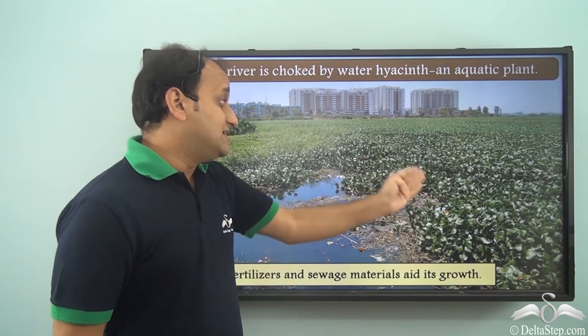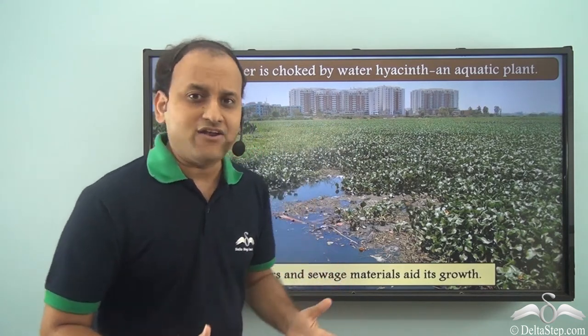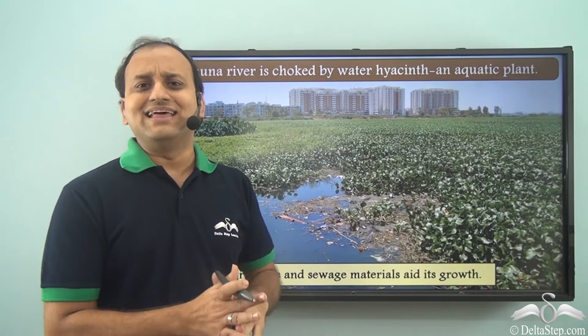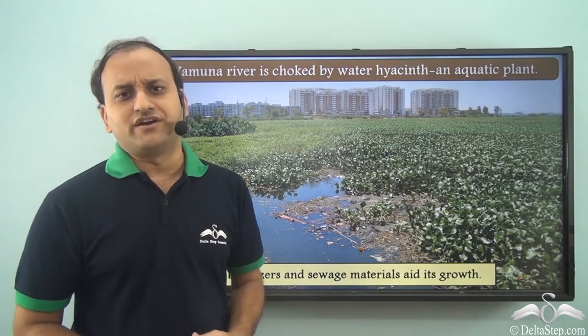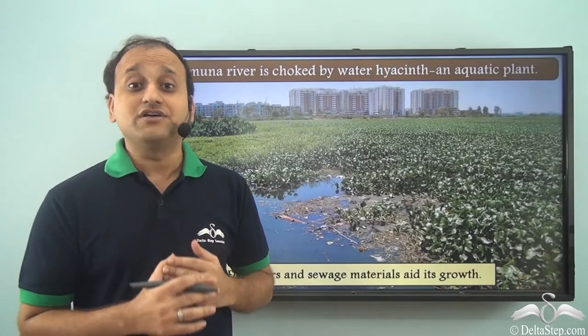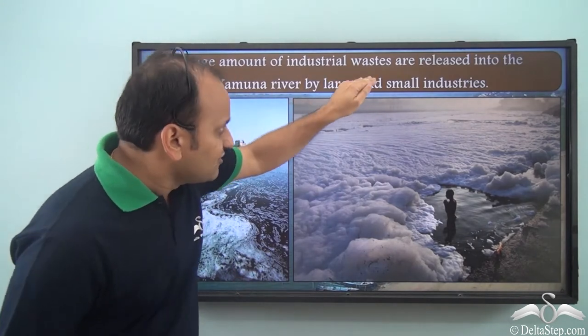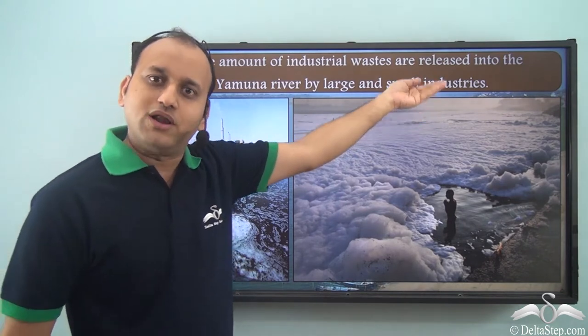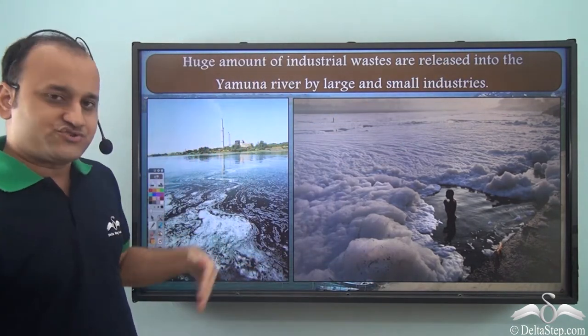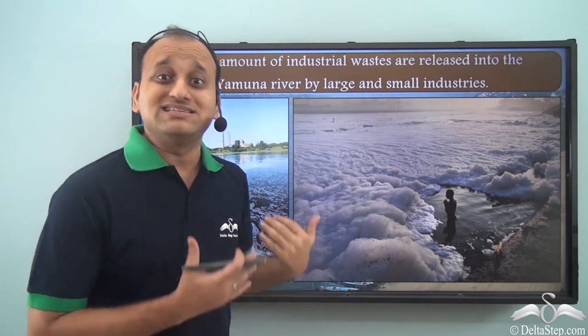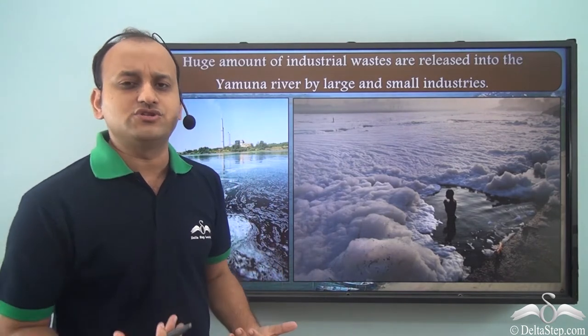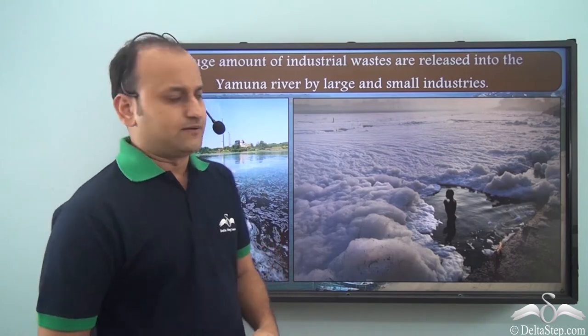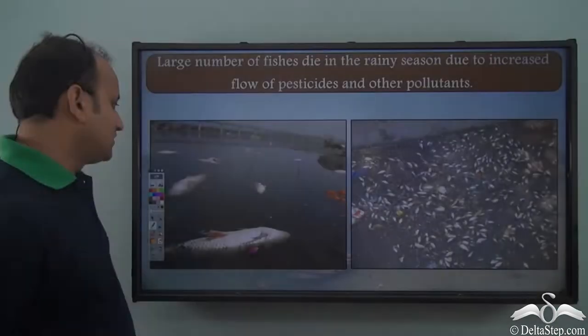When water hyacinth grows in huge numbers, it completely chokes the river and is a major reason for the current situation of the river. Additionally, huge amounts of industrial waste are released into the Yamuna River by large and small industries. Different industries release toxic chemicals into the river, resulting in huge amounts of river pollution.